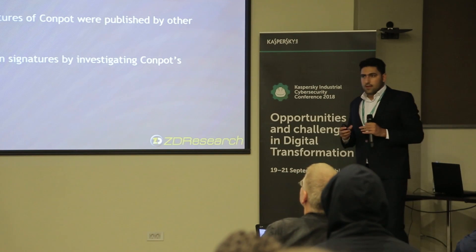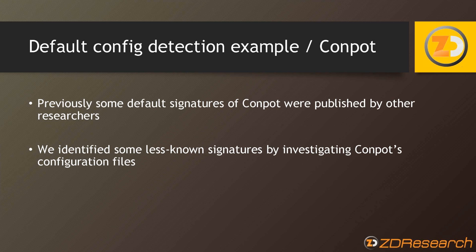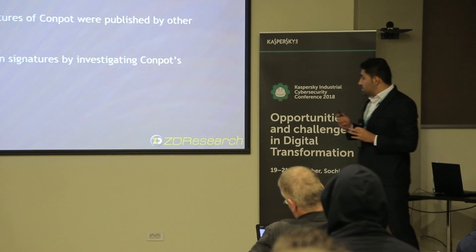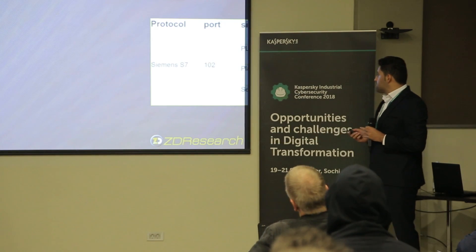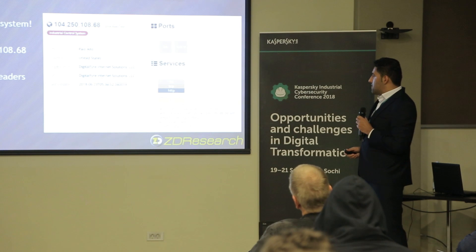For the first example of detecting an ICS honeypot, I chose Conpot. Previously, some researchers provided default signatures of Conpot. But if you look carefully at the Conpot configuration files, you can find new methods and new signatures.